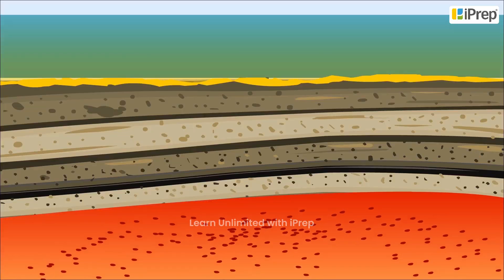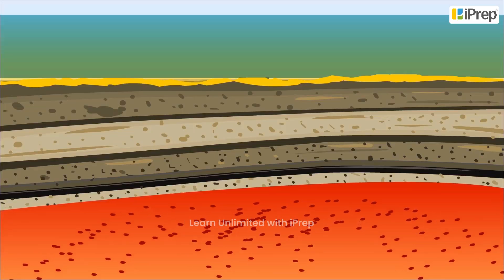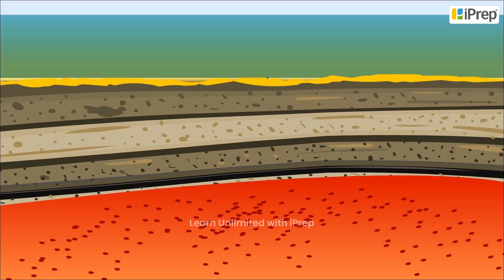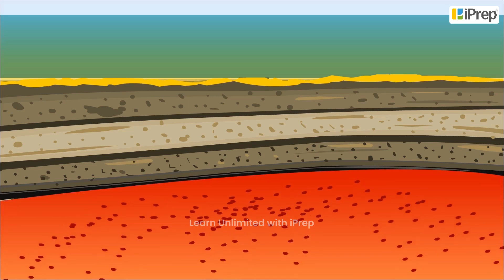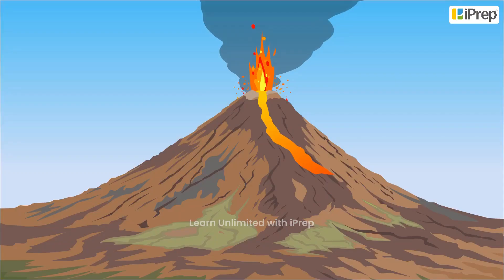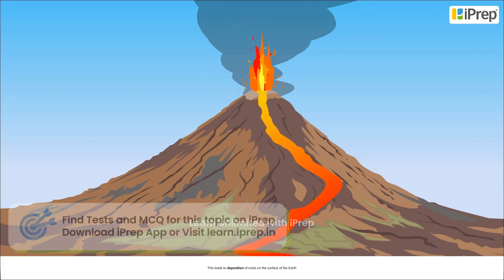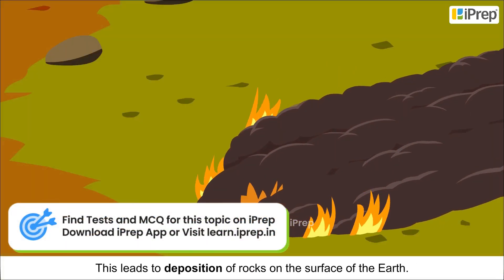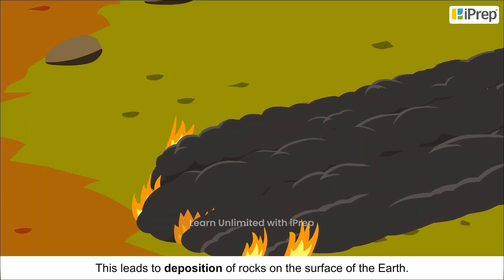Volcanoes erupt when there is movement within the Earth's mantle due to extreme heat and pressure, and molten magma pours out through a vent on the Earth's crust. This leads to deposition of rocks on the surface of the Earth.